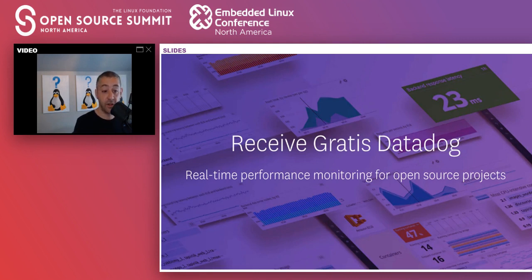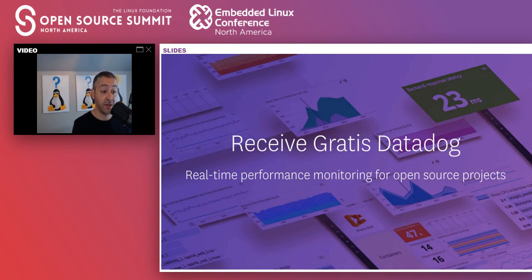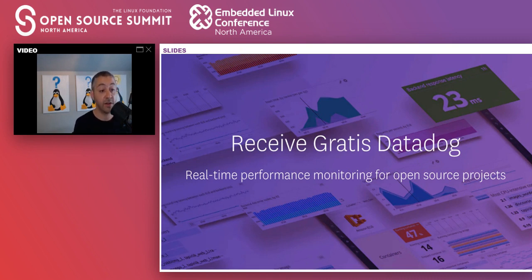One last thing: if you are an open source project and don't currently have an observability solution, we do offer free — absolutely no strings attached, no charge — Datadog to open source projects. It's a program called GANA that I currently lead. We have everything from the Apache Software Foundation and Python Software Foundation all the way down to very small projects. If this is a need you have, contact me and we're happy to help.